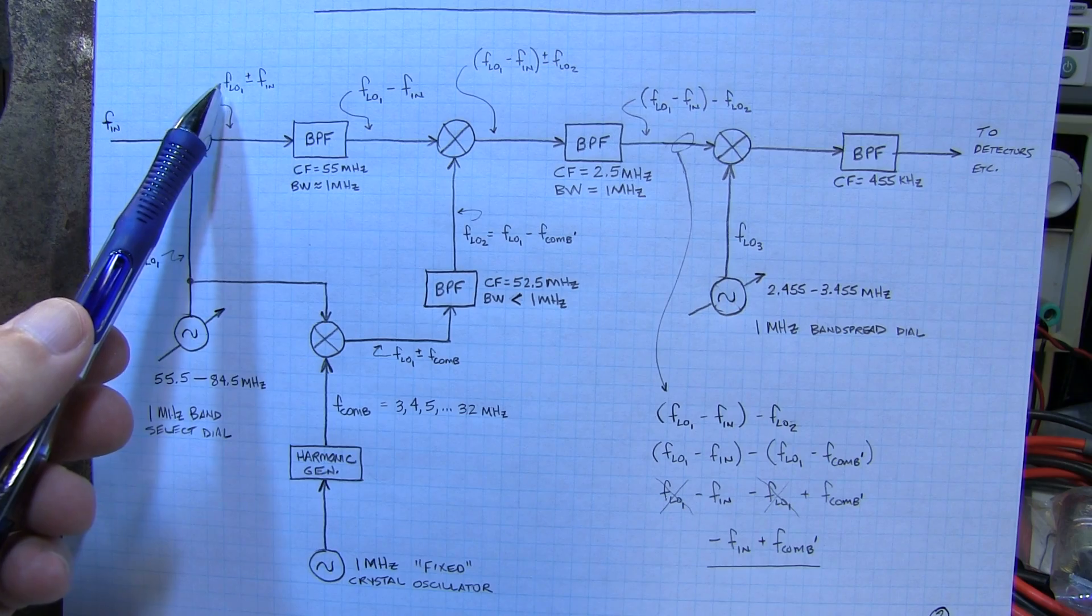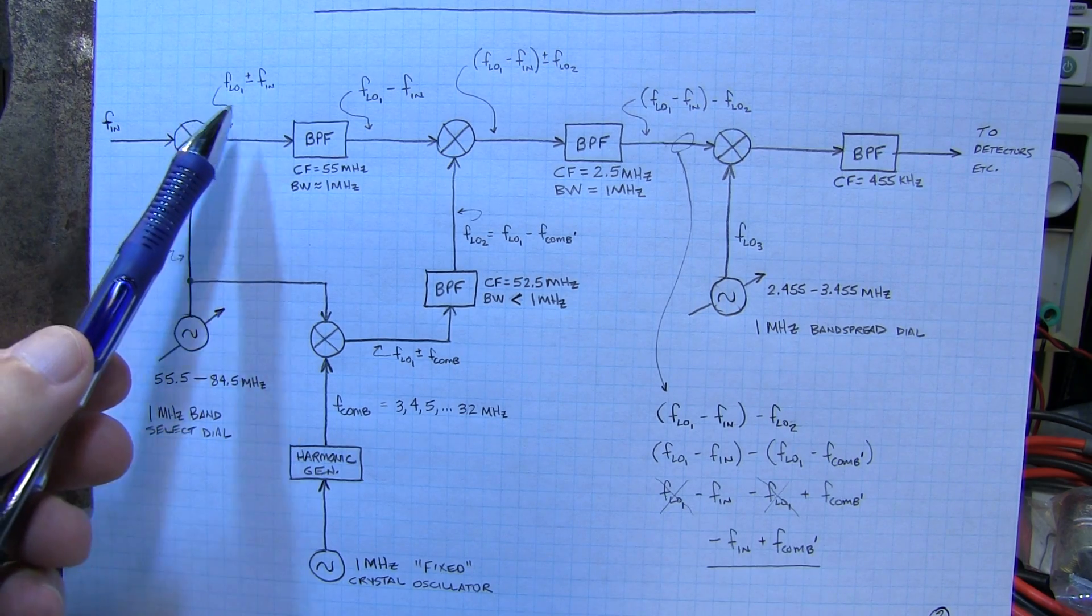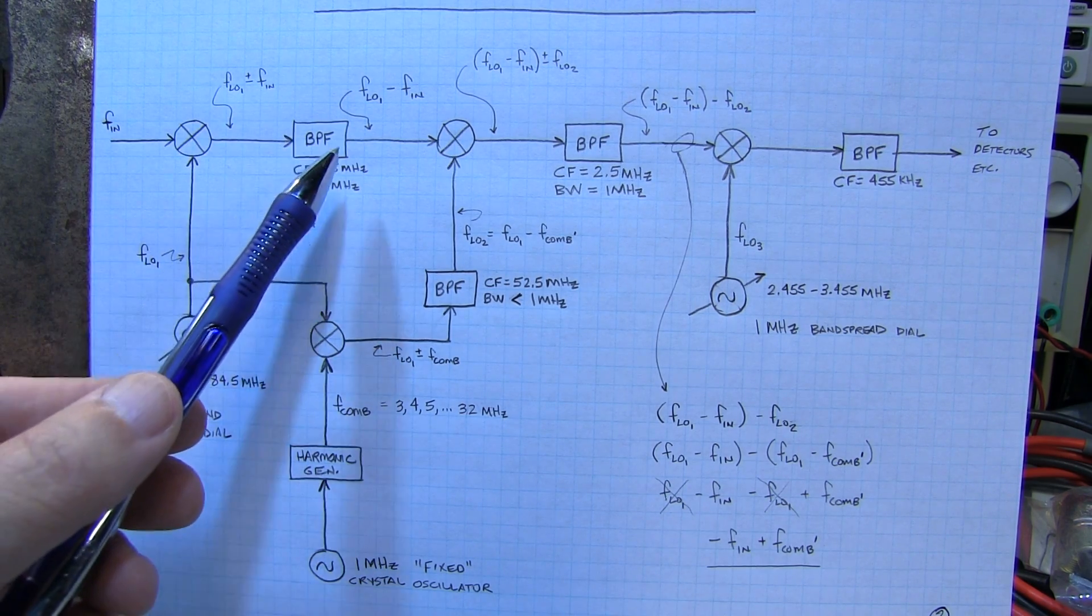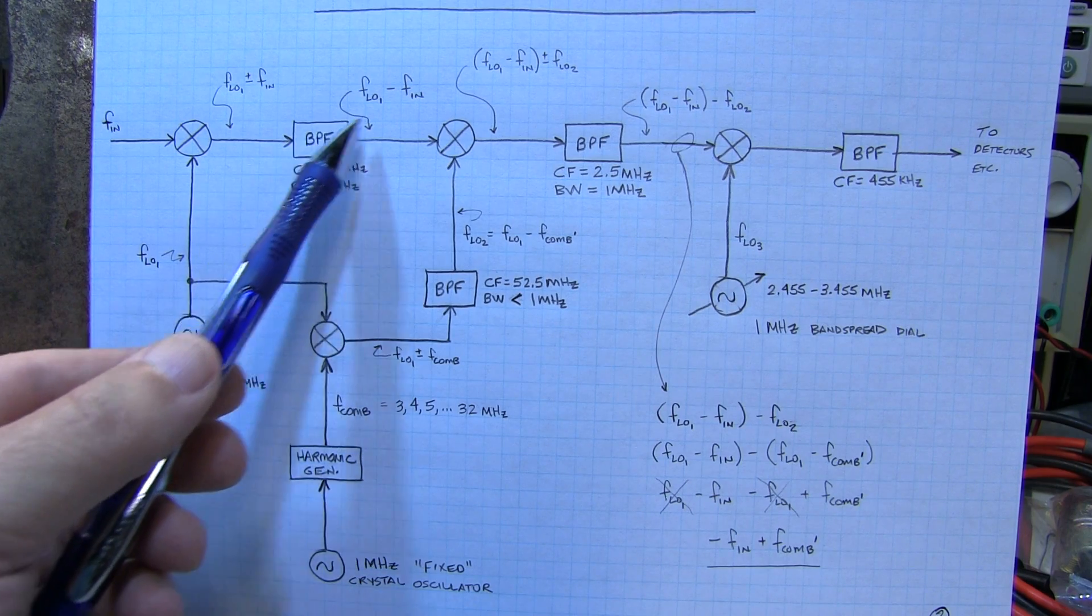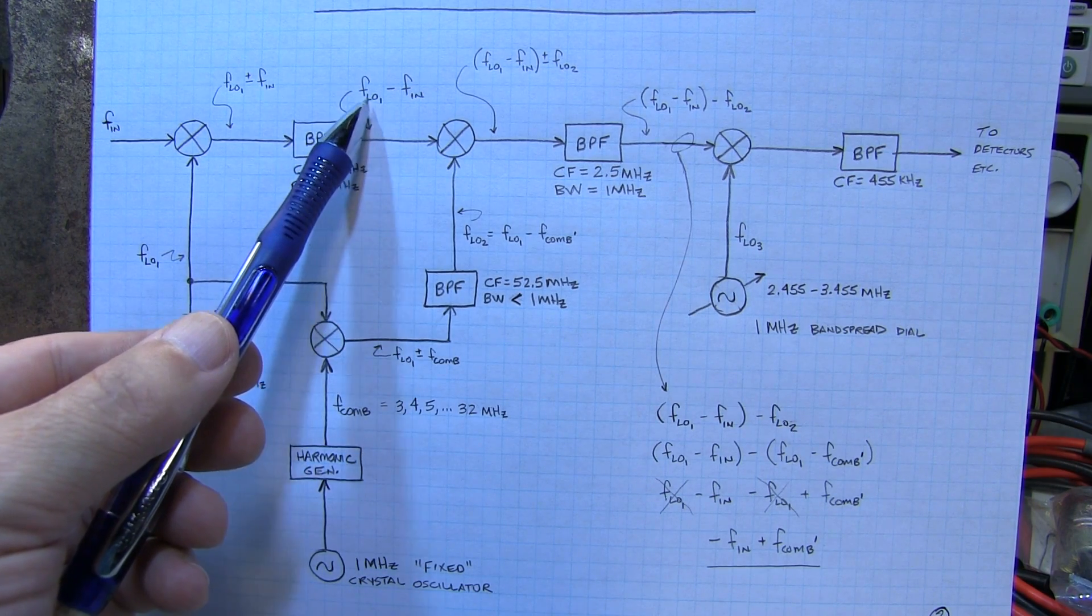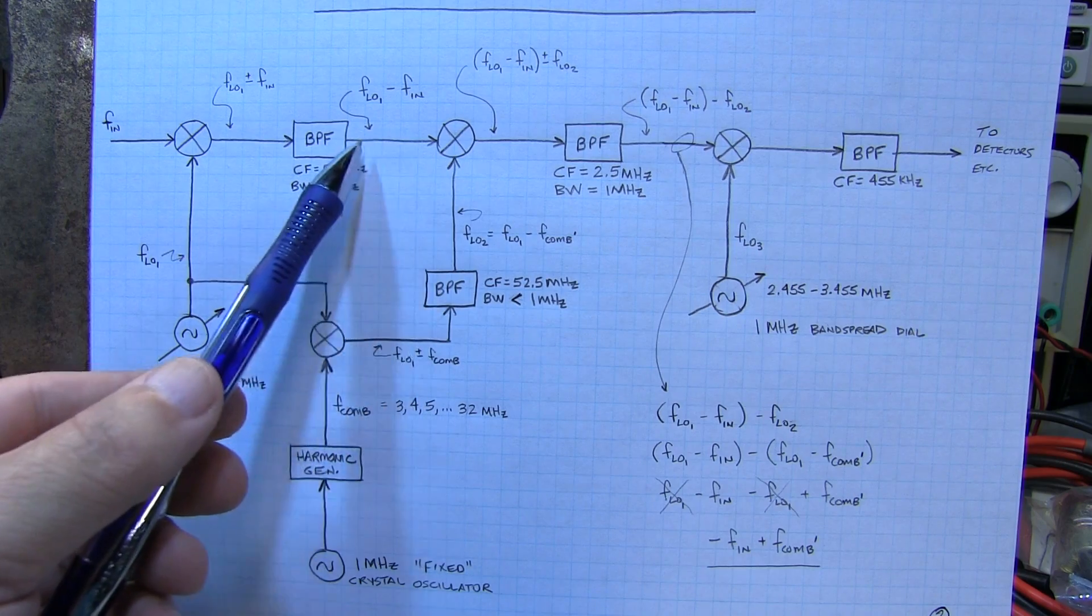Primarily the two that we're interested in would be the local oscillator frequency plus or minus our input frequency. Usually we're interested in only one of those, the sum or difference, and it's usually the difference. So we're going to use a bandpass filter to give us just the local oscillator minus Fn. That becomes our first IF.